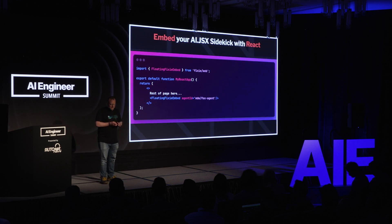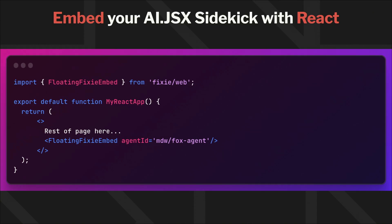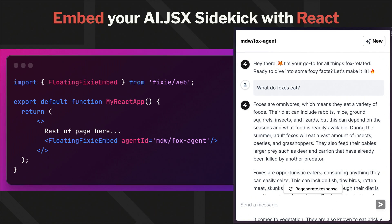Finally, when you're done building an AI JSX application and you want to place it into your website, web app, or mobile app, you can just drop it right in as a React component. In this case, we use the floating Fixie embed component — when you instantiate this, it gives you a fully rendered UI for your AI JSX application, with a chat window, session management, markdown rendering, custom UI, all the things you might want — in effectively one line of code.